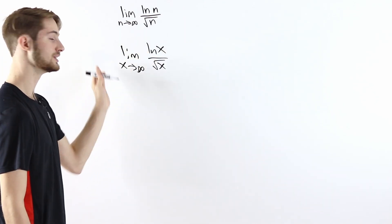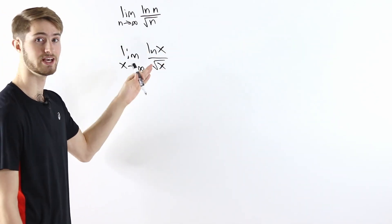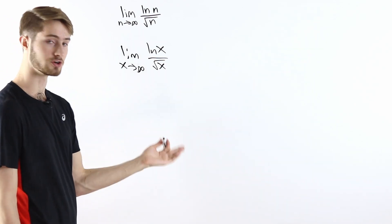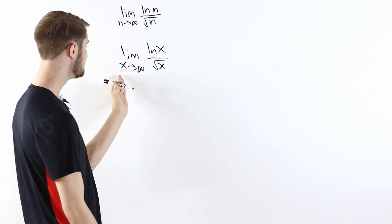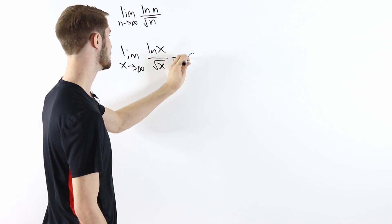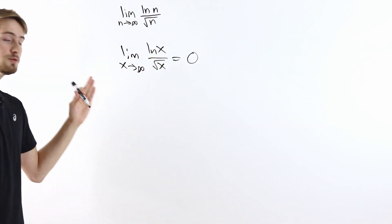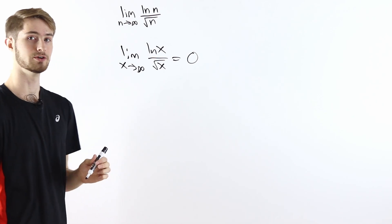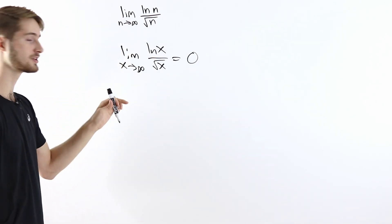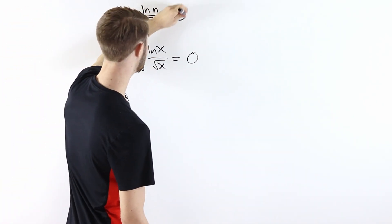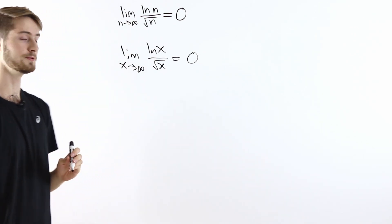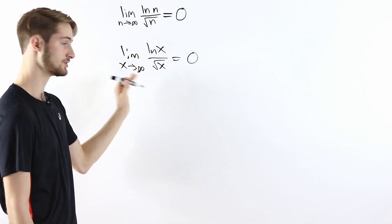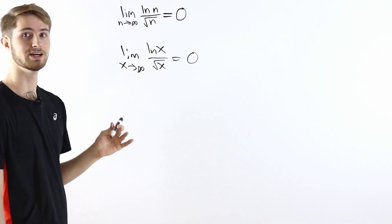The reason we want to use real numbers is that this lets us take derivatives. So we can use something like L'Hôpital's rule to find out that the limit as x goes to infinity equals zero. And now that we know that the limit as x goes to infinity equals zero, that tells us that the limit as n goes to infinity also equals zero. So we're able to use derivative tricks like L'Hôpital's rule to take a limit of integers.